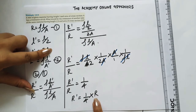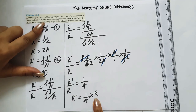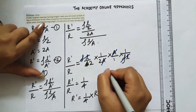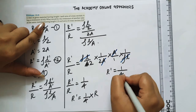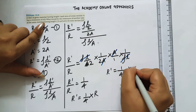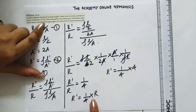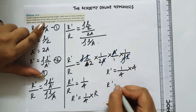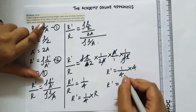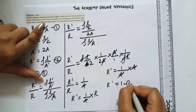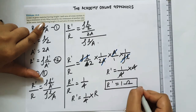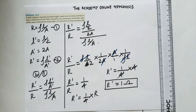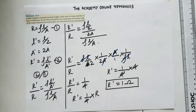Since R is given as 4 ohms, R dash equals 1 by 4 into 4, which gives R dash equals 1 ohm. So the new resistance is 1 ohm.